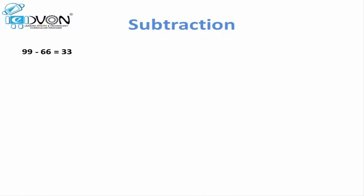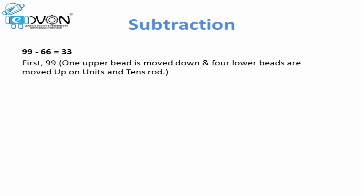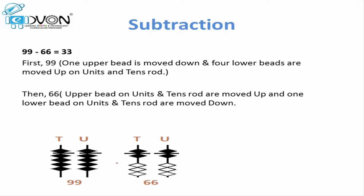Let's take an example for subtraction of similar values on abacus. If we want to subtract 66 from 99, first we will place 99 on abacus — 99 means upper beat and four lower beats touching the calculation bar on both the rods. As we are subtracting, subtraction means moving beats away from the calculation bar. For subtracting 66, upper beat and one lower beat are moved away from the calculation bar on both the rods. As a result, we get only three lower beats touching the calculation bar on tens rod and units rod. This represents the value 33, so our answer would be 33.